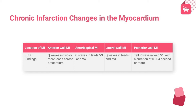In lateral wall MI, the findings include Q waves in leads I and aVL. Posterior wall MI shows a tall R wave in lead V1 with a duration of 0.04 seconds or more.